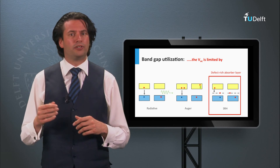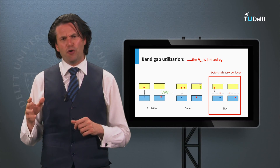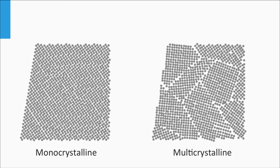Considering Shockley-Read-Hall recombination, the recombination of charge carriers is related to electrons trapped at defect states. In view of defects in the bulk of silicon, we can distinguish two types of silicon wafers: monocrystalline silicon and multicrystalline silicon, also called polycrystalline silicon. Monocrystalline silicon is a crystalline solid in which the crystal lattice is continuous and unbroken without grain boundaries over the entire solid. In contrast, polycrystalline silicon consists of many small crystalline grains with random orientations and has grain boundaries between the grains.